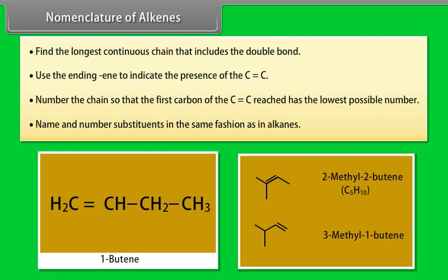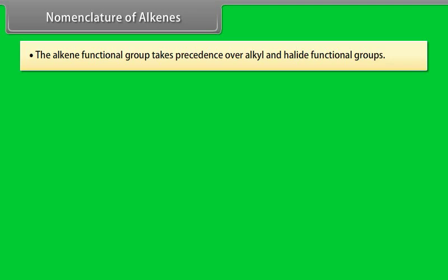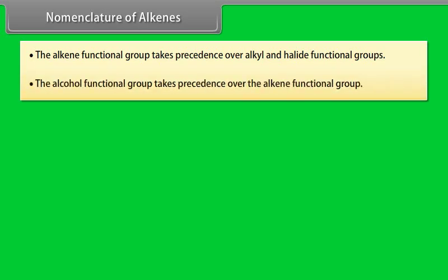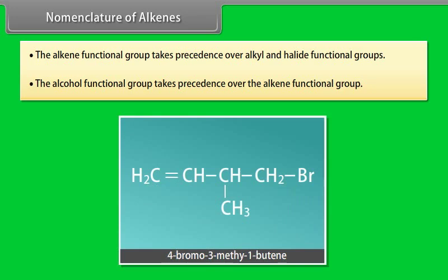Step 5: The alkene functional group takes precedence over alkyl and halide functional groups. Step 6: The alcohol functional group takes precedence over the alkene functional group. For example: 4-bromo-3-methyl-1-butene.